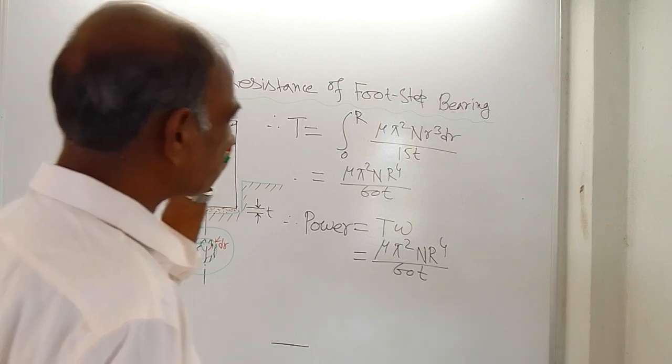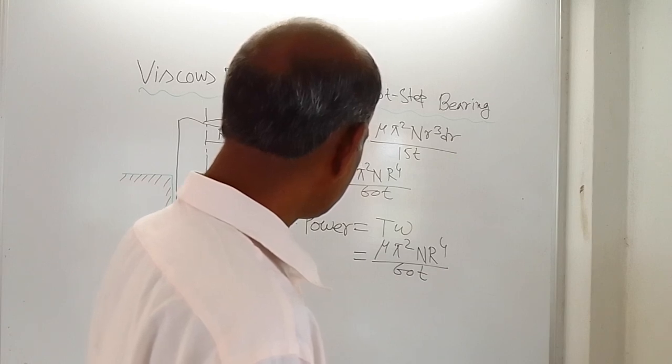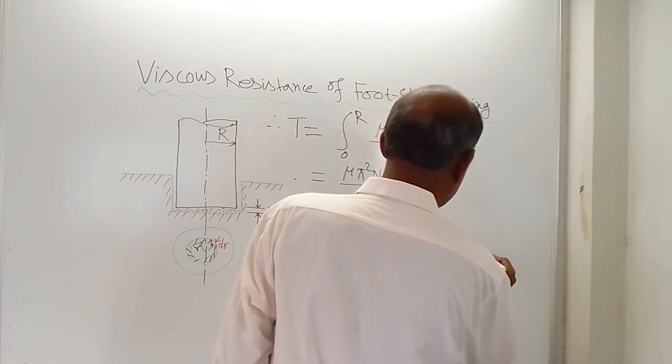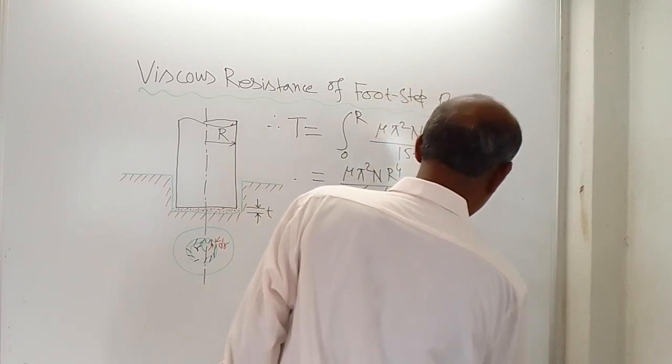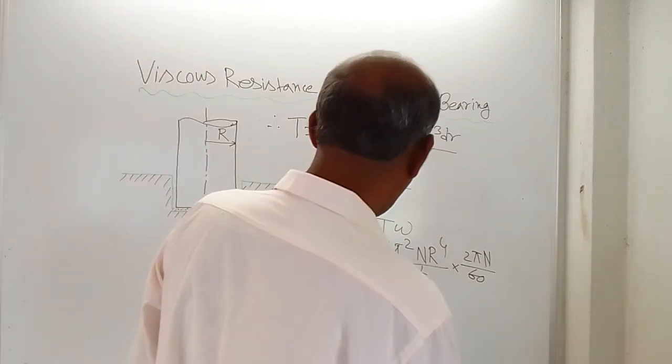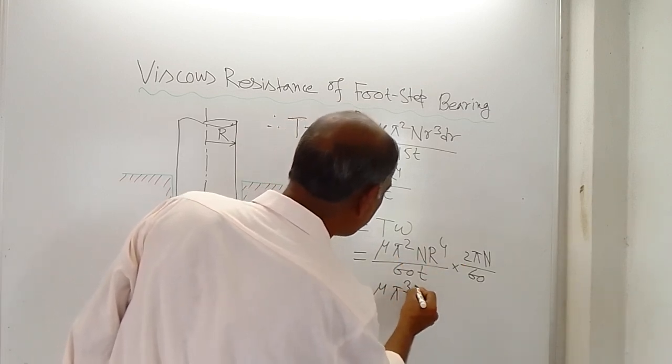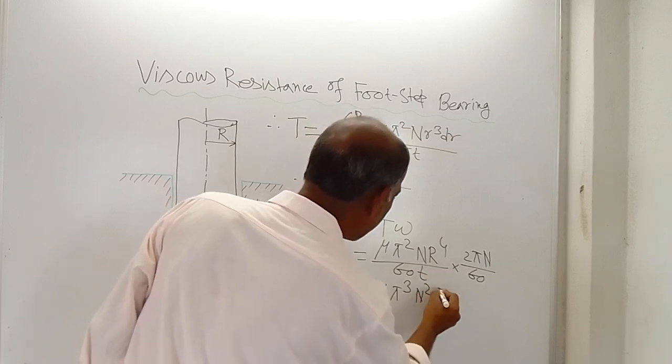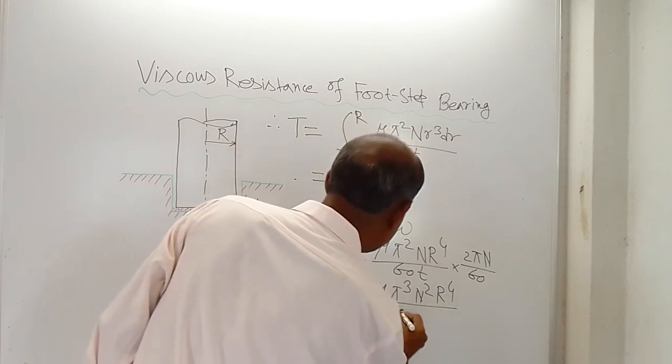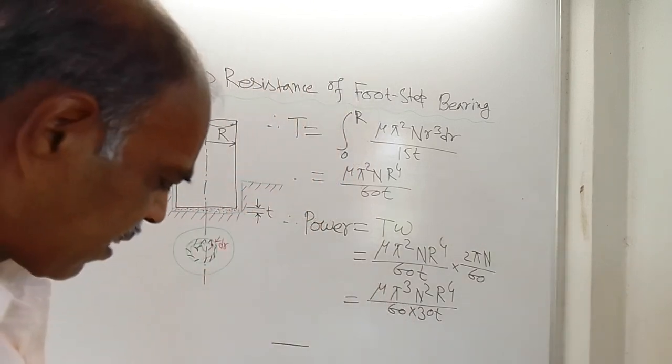Again, I have committed a mistake every now and then. Here, omega is equal to 2π n / 60. Am I right? 2π n / 60 is omega. So result is μ cube of π, you will get π³, then square of n, then r to the power 4. Then this 2 is there, so you are getting 60 × 30t. Right? So this is the result. I think this result is correct.